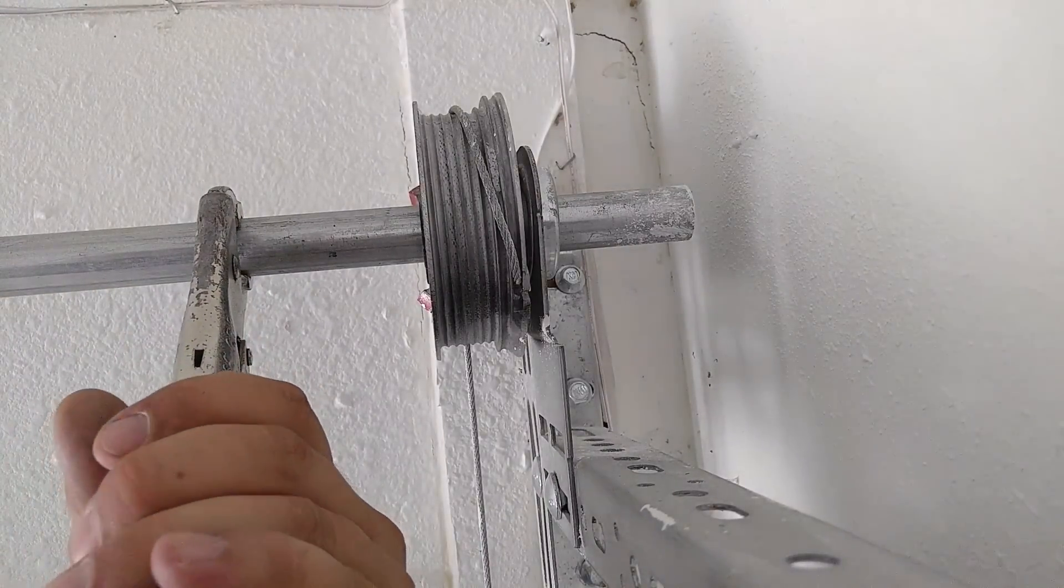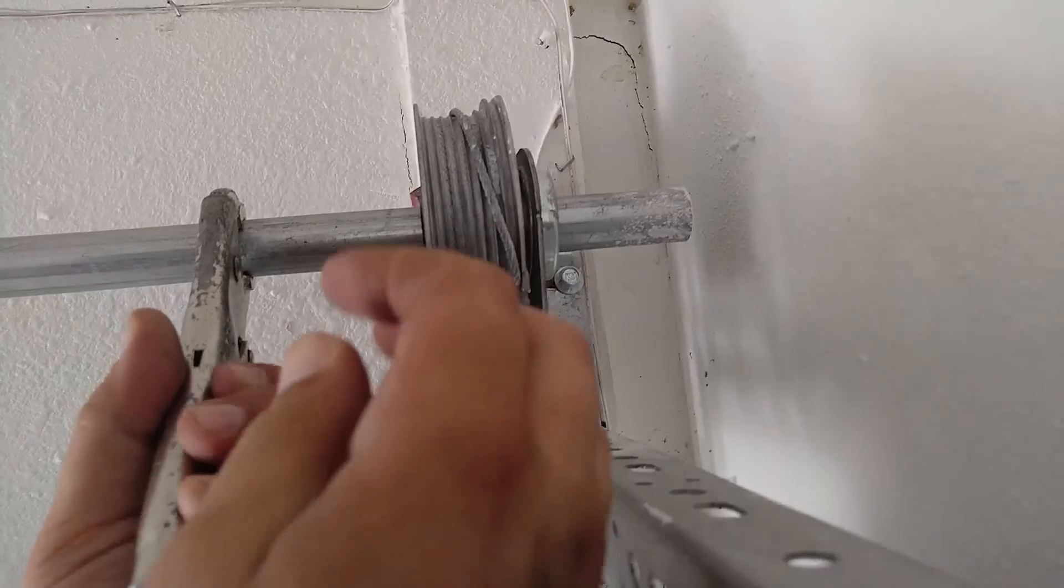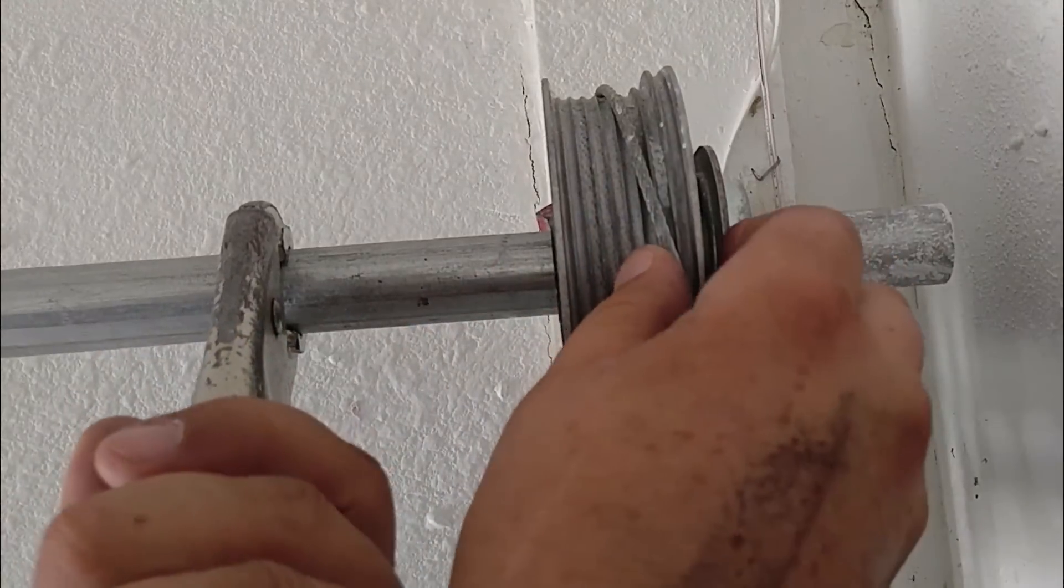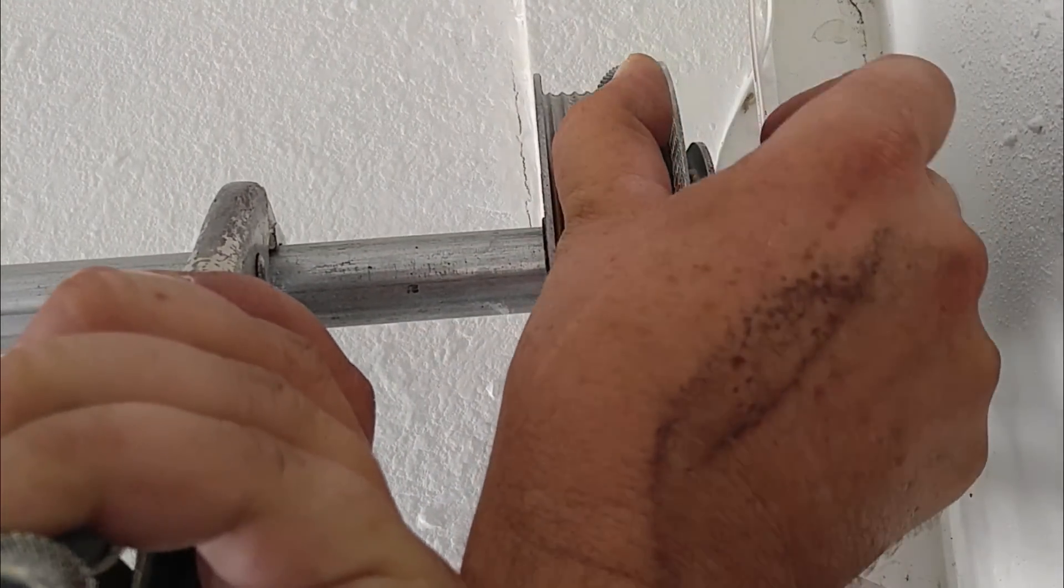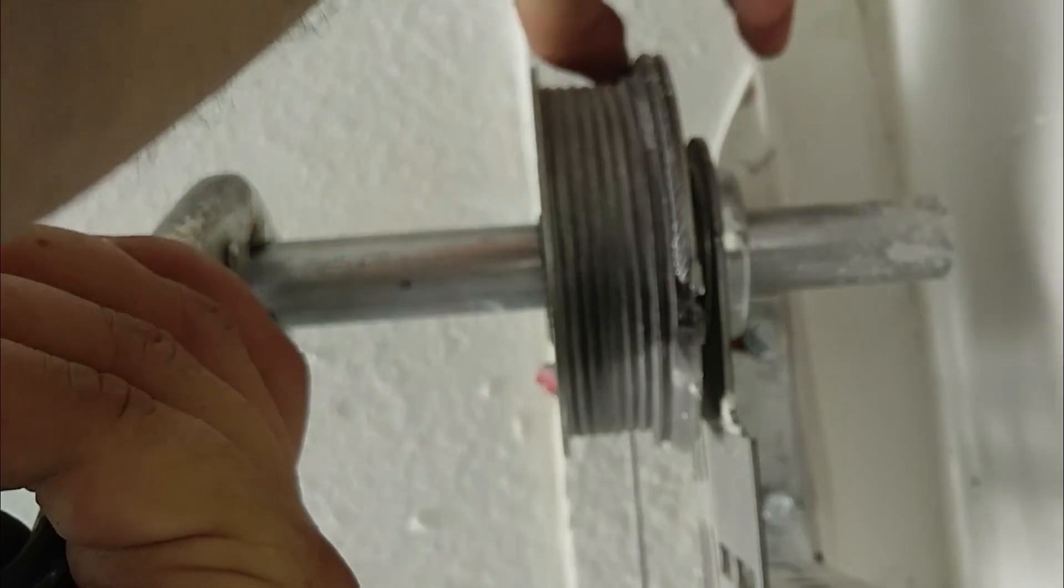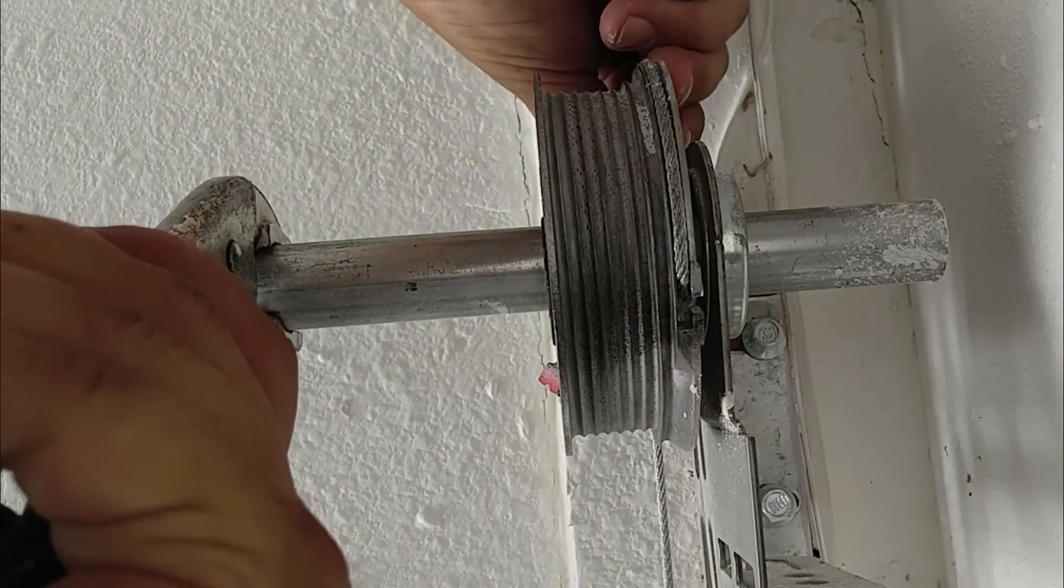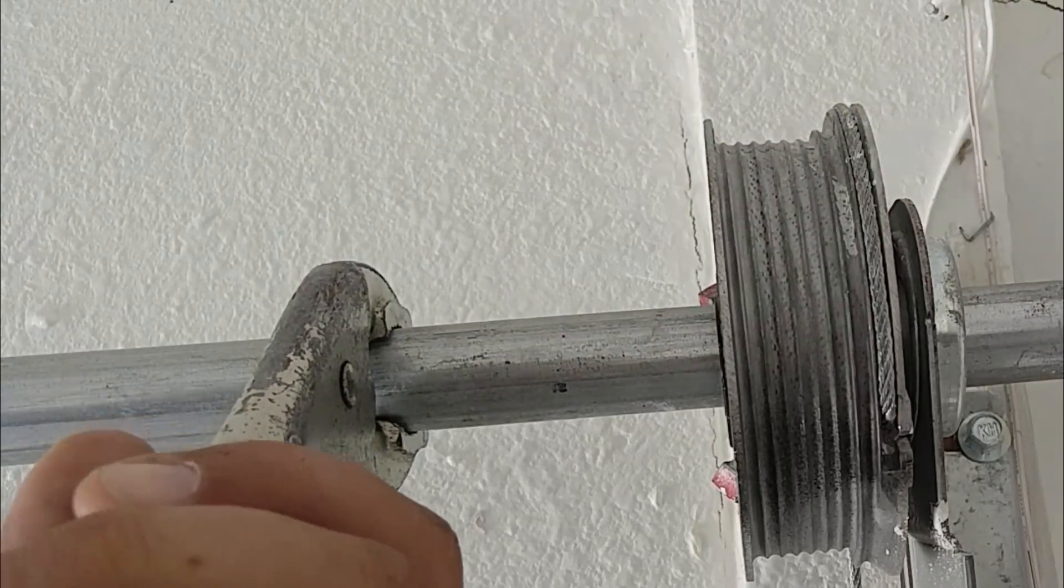Check this out. With your vice grips gripped down about right here, lift up, and as you're lifting up, with your thumb just feed that cable back on the high lift portion.